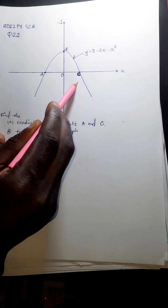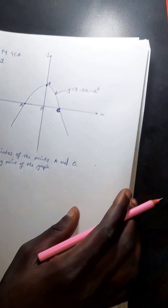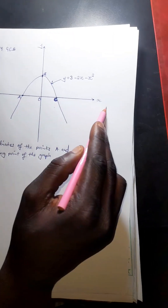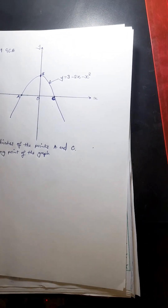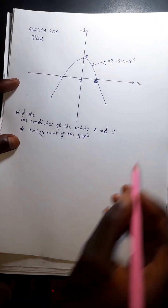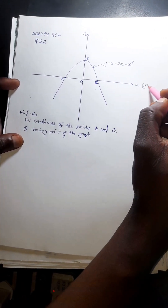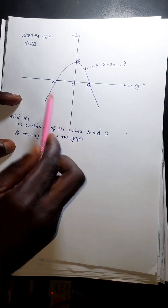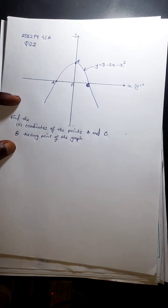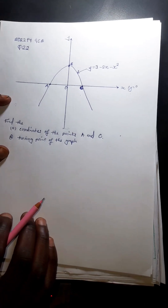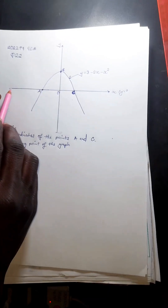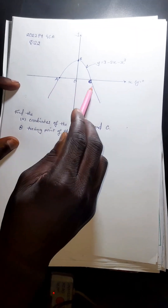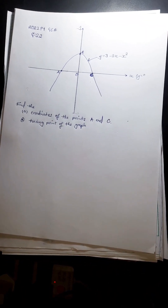Before we find the coordinates of A and C, note that the value of y on the x-axis is zero — everywhere on the x-axis, y is equal to zero. And on the y-axis, x is equal to zero. Since A and C are on the x-axis, we proceed accordingly.